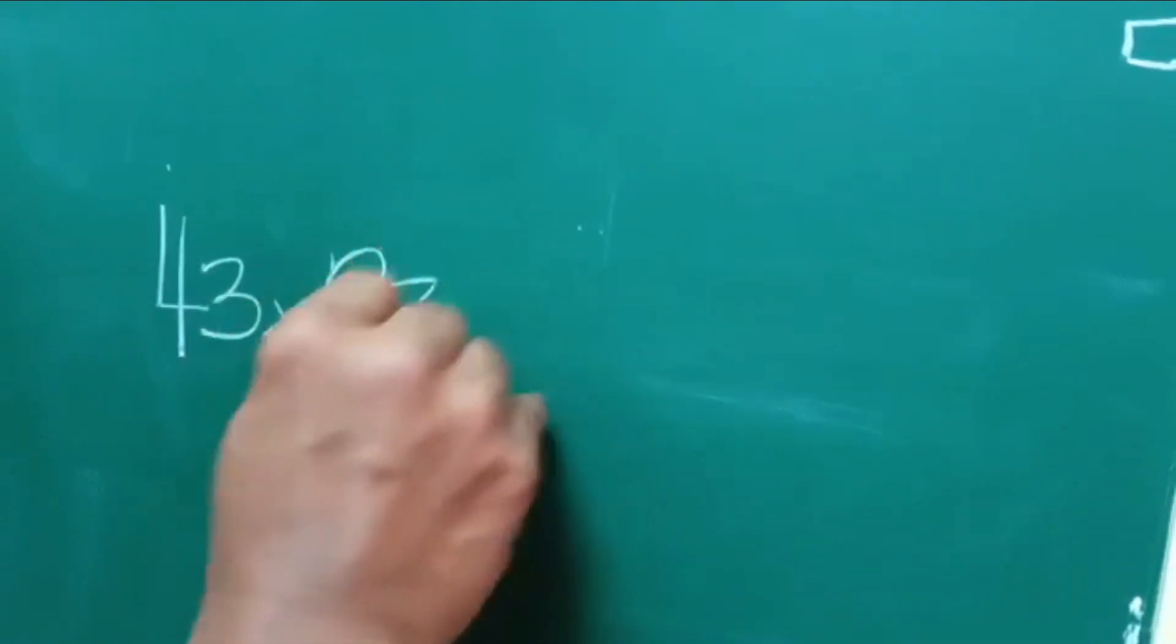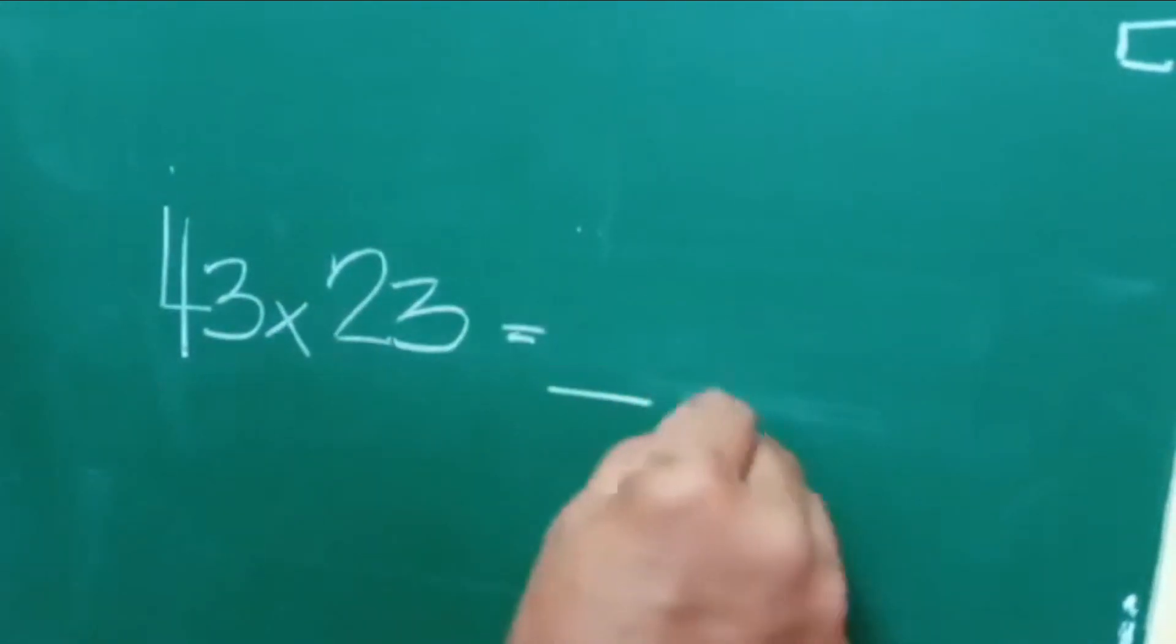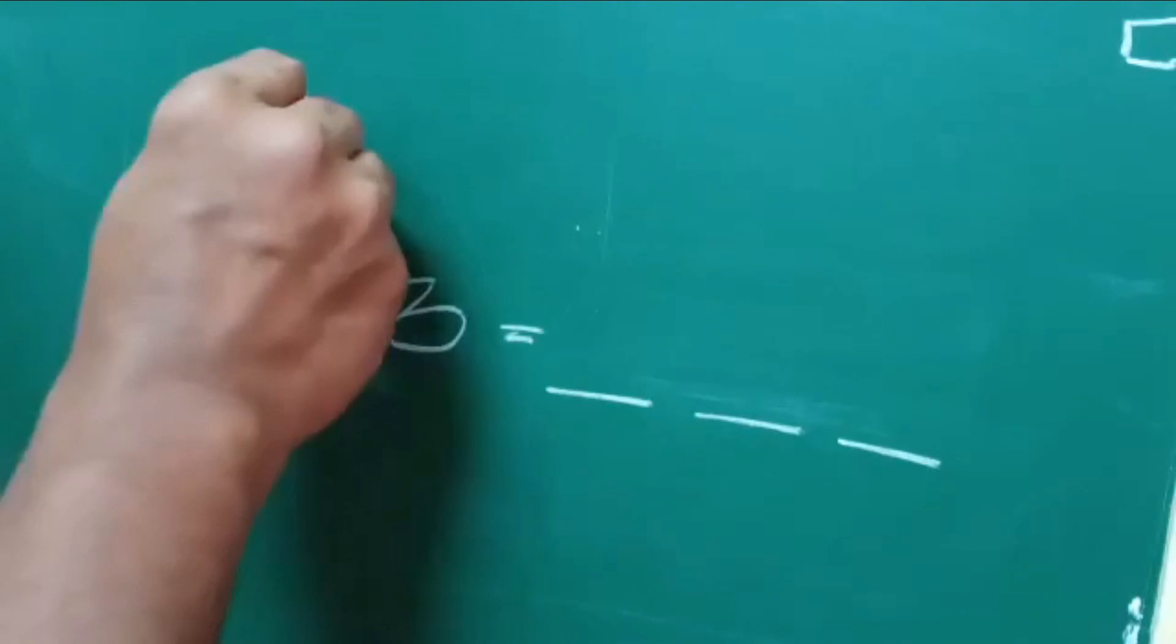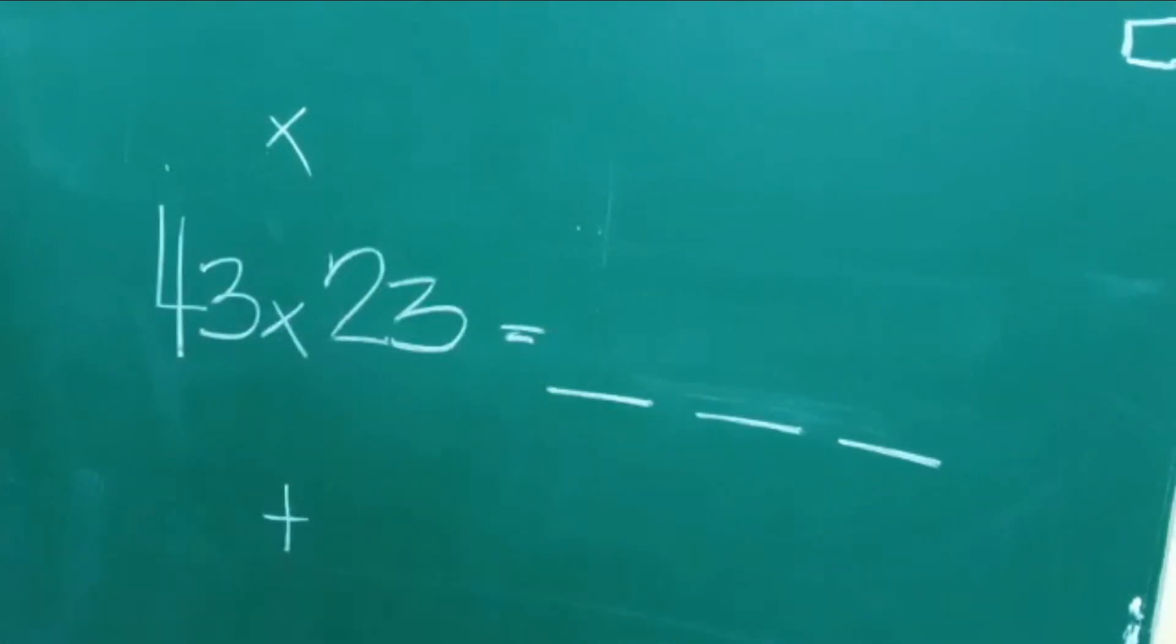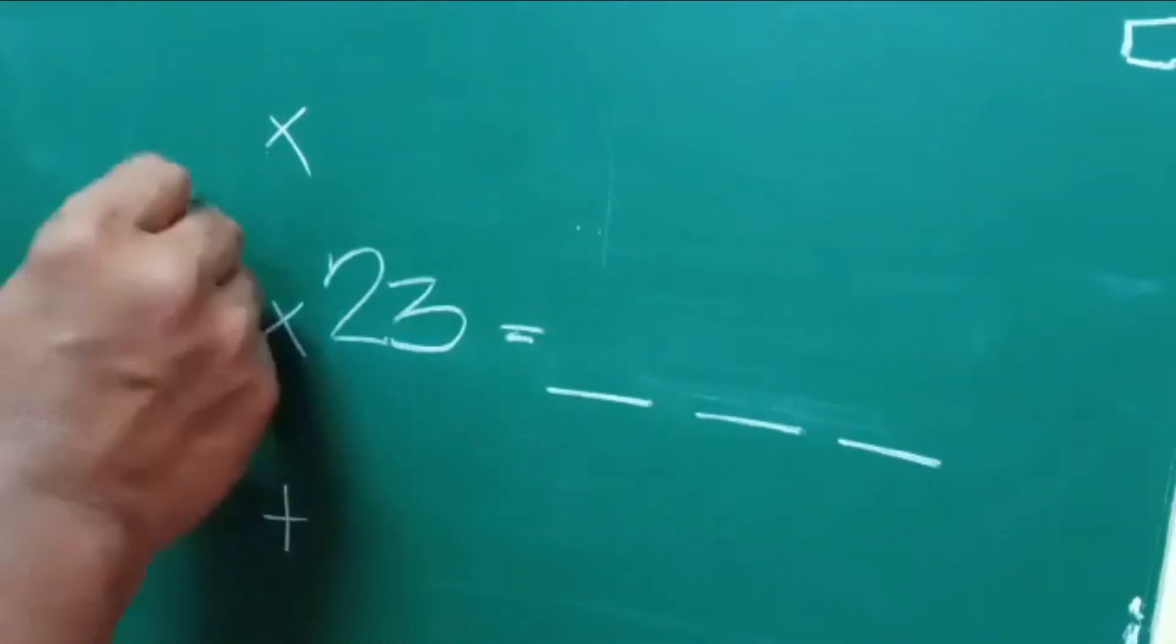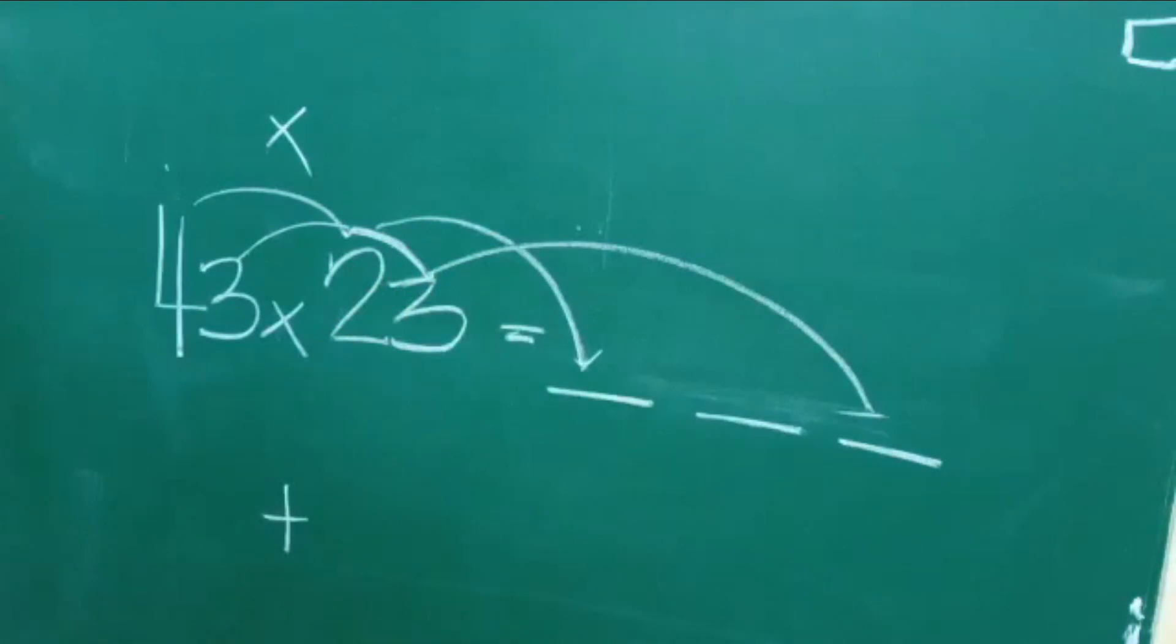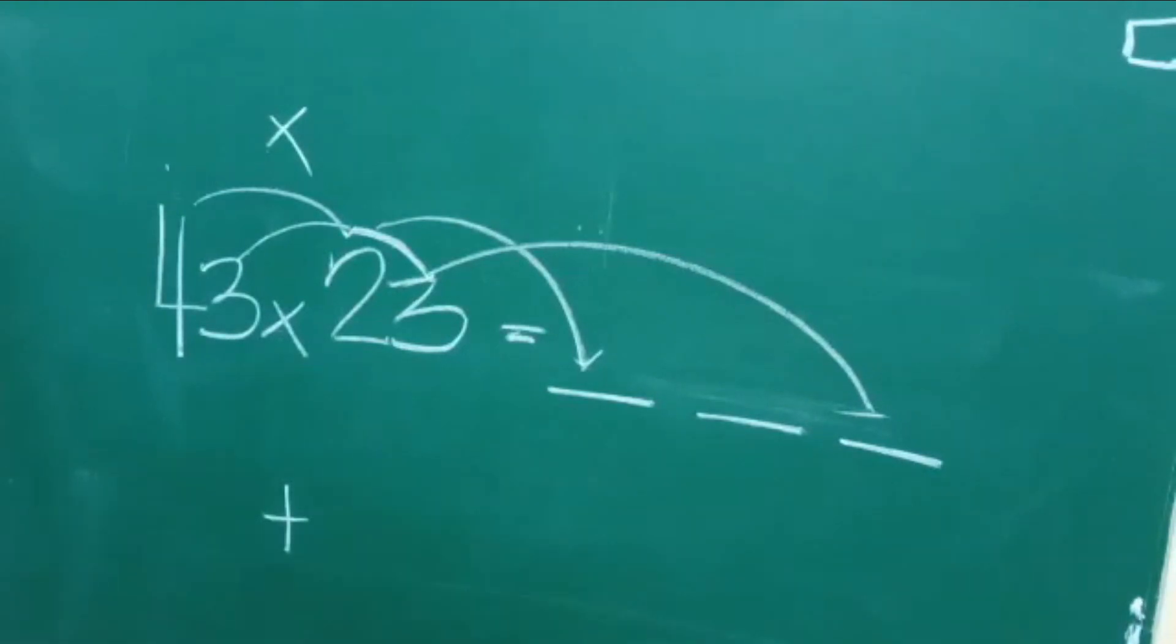The first numbers that we have to solve are 43 multiplied by 23. So the first thing that we have to remember is that this is multiply on the top and then plus at the bottom. So this number should be multiplied, this one, and then it will be here. And then you have to add the product of these two bottom numbers.